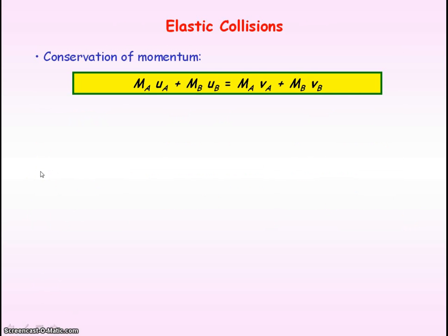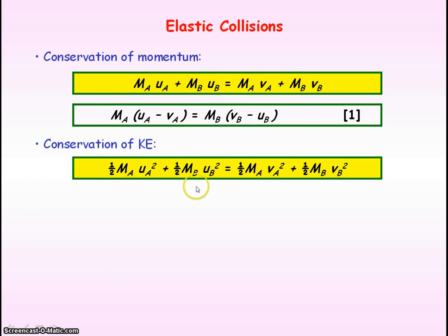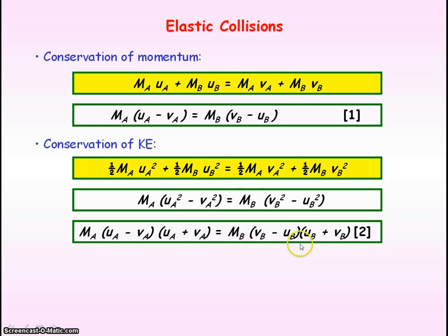For an elastic collision between two objects A and B, applying conservation of momentum gives us: total momentum before equals total momentum after. We rearrange to get the A terms on one side and the B terms on the other. Then applying conservation of kinetic energy: total KE before equals total KE after. The half cancels throughout. Rearranging again, and factorising uA² − vA² as (uA + vA)(uA − vA), we factorise both sides to give equation two.